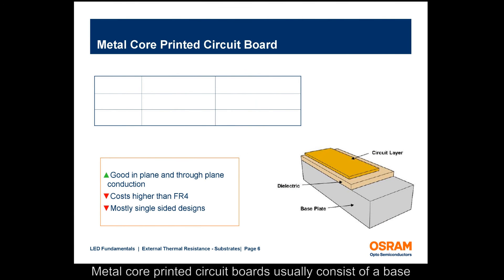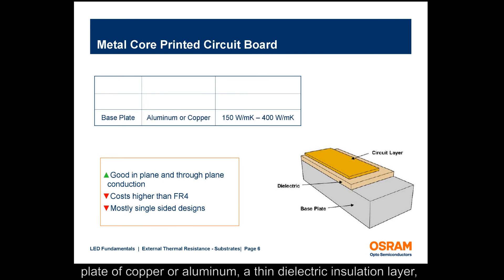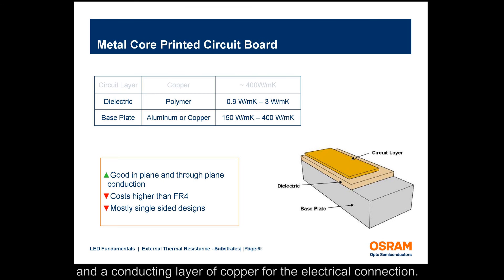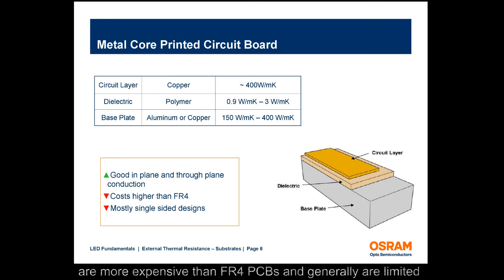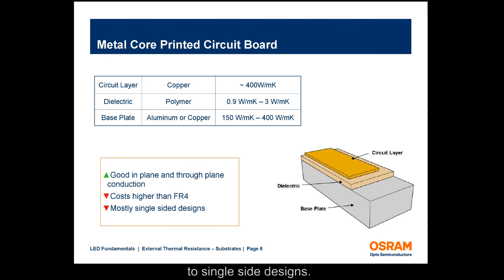Metal core printed circuit boards usually consist of a base plate of copper or aluminum, a thin dielectric insulation layer, and a conducting layer of copper for the electrical connection. A metal core printed circuit board is ideally suited for both horizontal and vertical heat conduction. The downside is they are more expensive than FR4 PCBs and generally are limited to single-side designs.